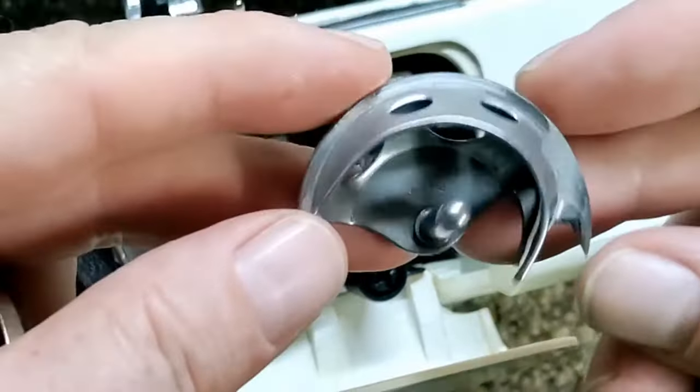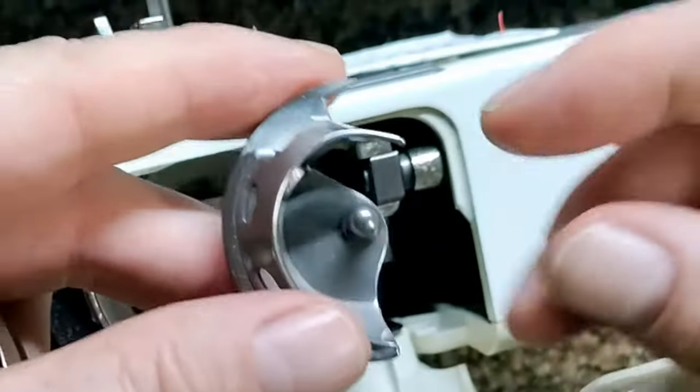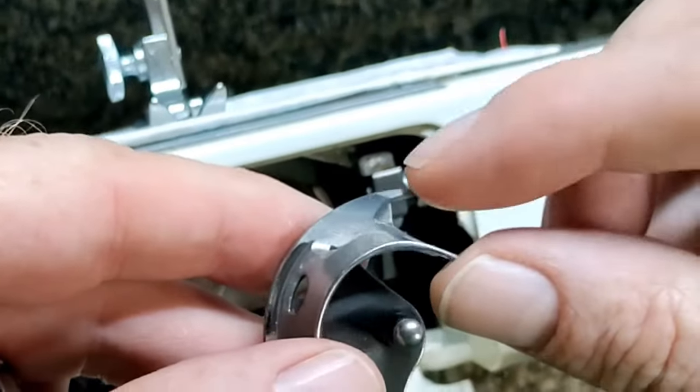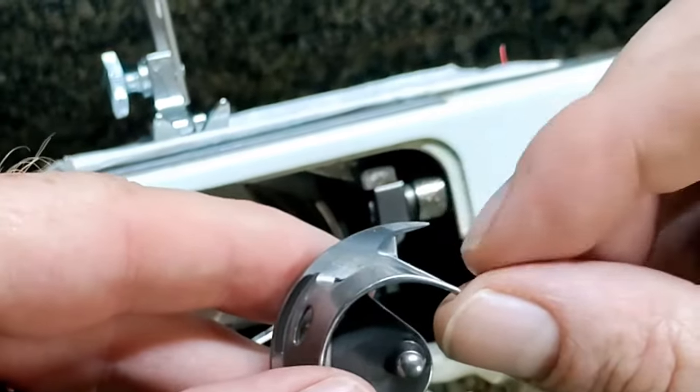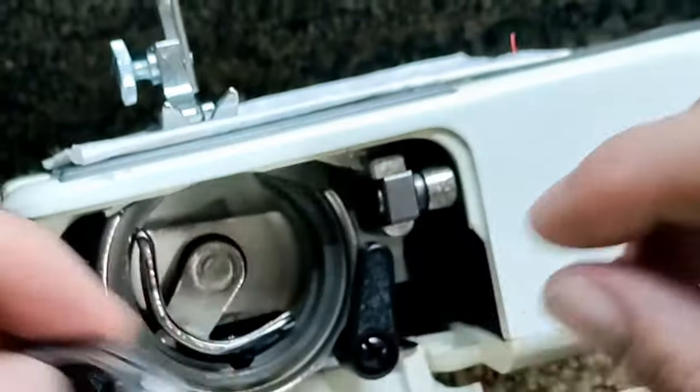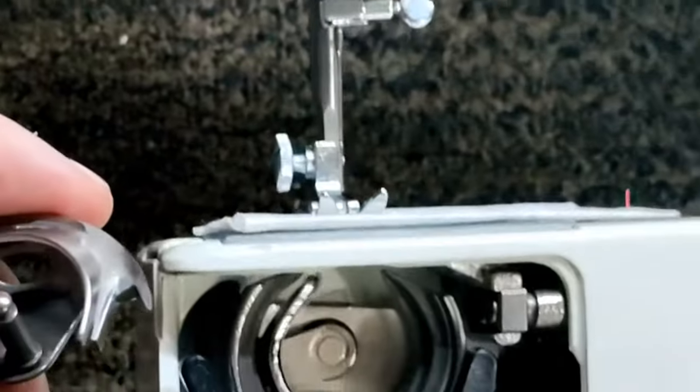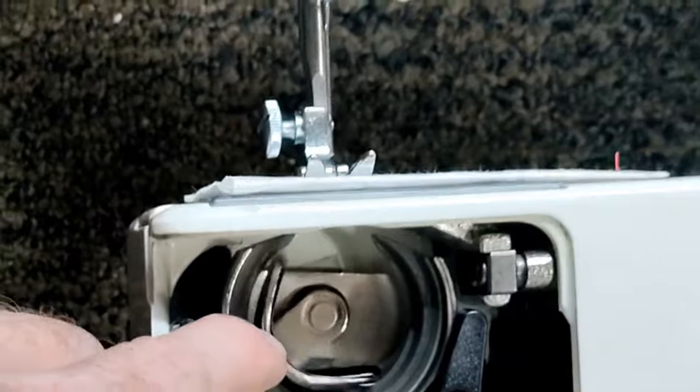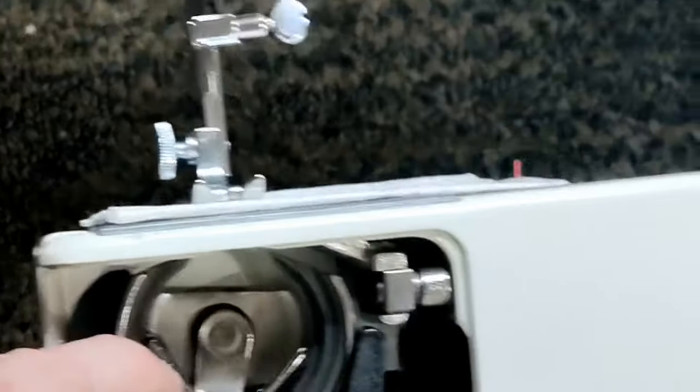So first off, you're going to take your hook here. Now you can see this pointy part, this is the hook that forms the stitch and you're going to grab your hand wheel up here and rotate it back and forth and you can see this piece moving back and forth, this is your hook driver.